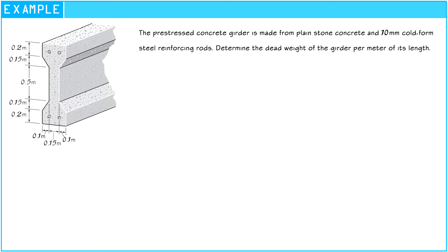The prestressed concrete girder is made from plain stone concrete and 10mm cold form steel reinforcing rods. Determine the dead weight of the girder per meter of its length.